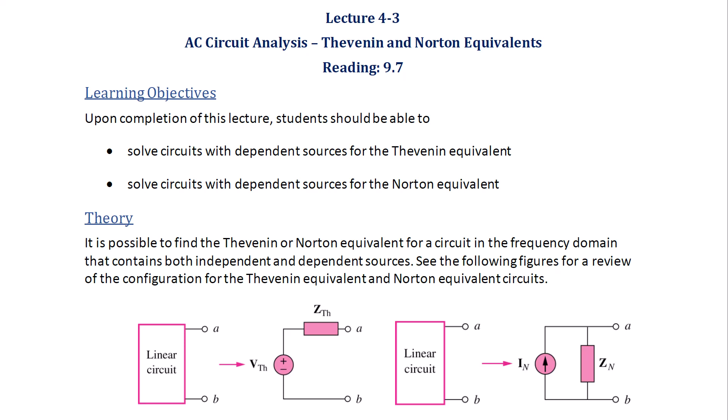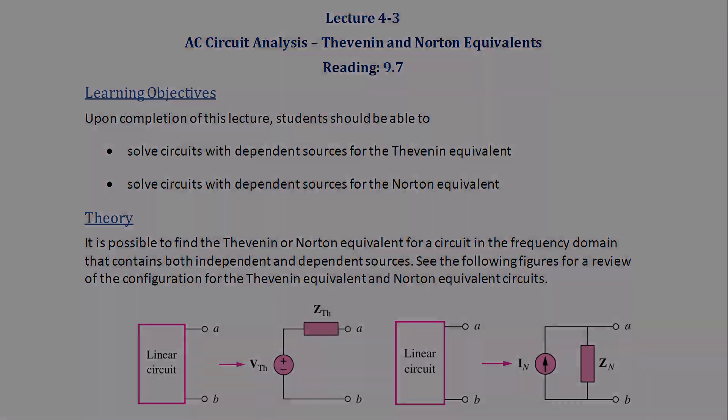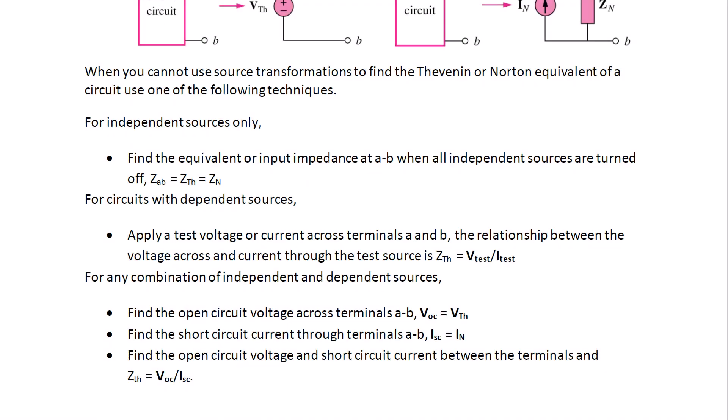Recall that the Thevenin and Norton Equivalent of a circuit is a voltage source in series with an impedance and a current source in parallel with an impedance. So when you cannot use source transformations to solve the Thevenin or Norton Equivalent, for independent sources only, find the equivalent input impedance at terminals A and B by turning off voltage and current sources and finding Z_AB, which equals Z Thevenin which equals Z Norton.